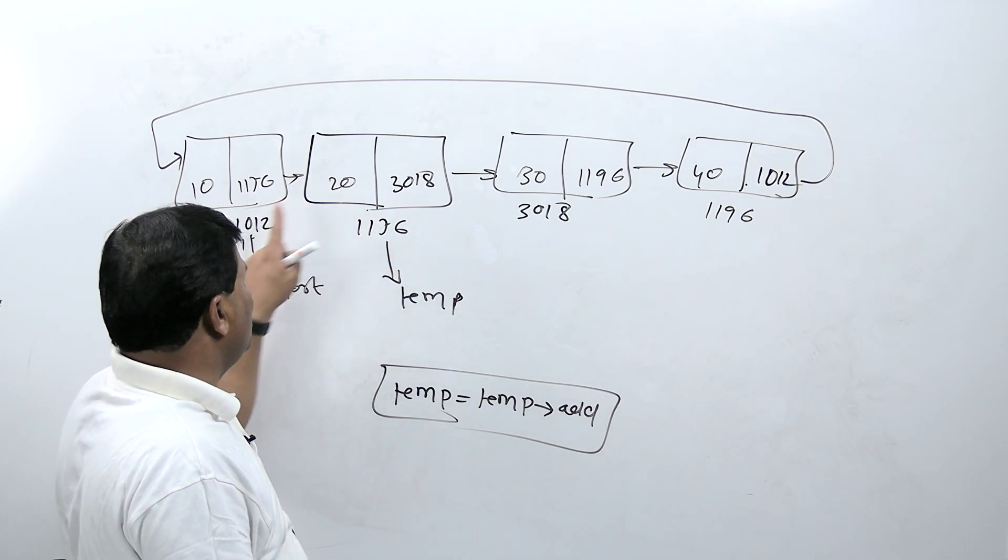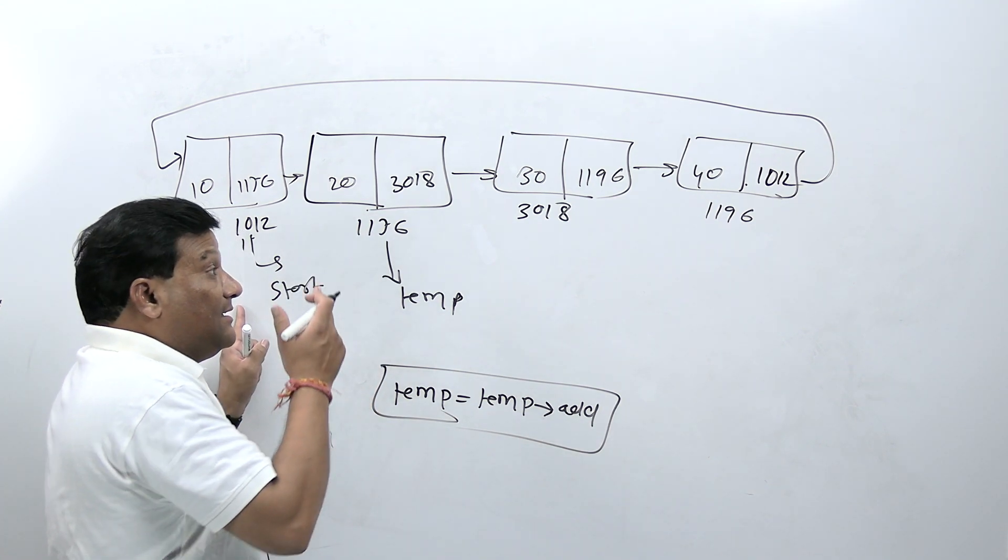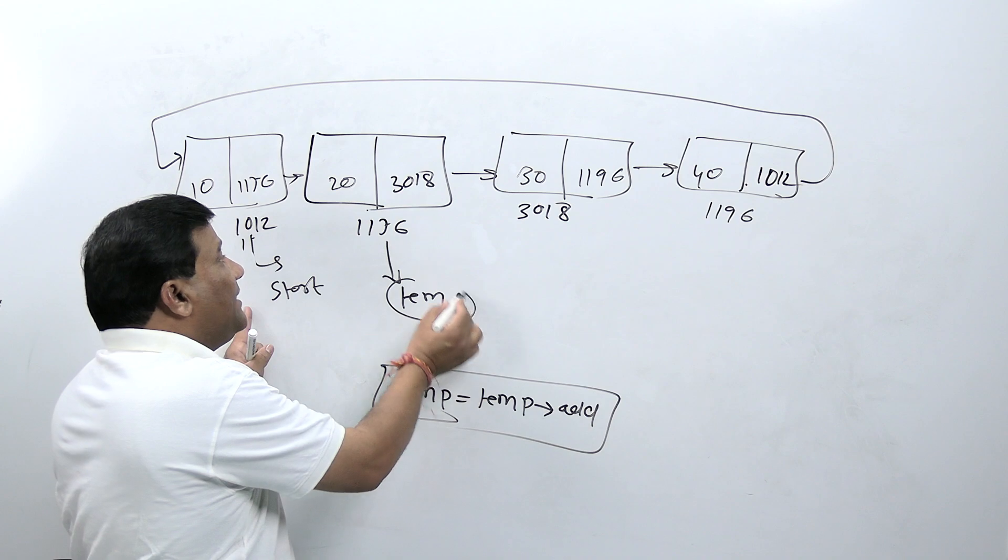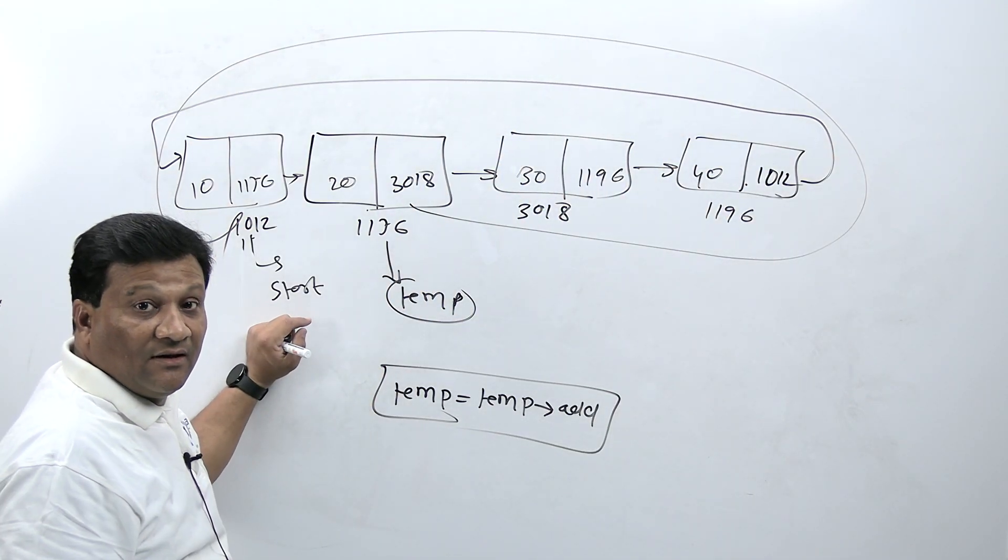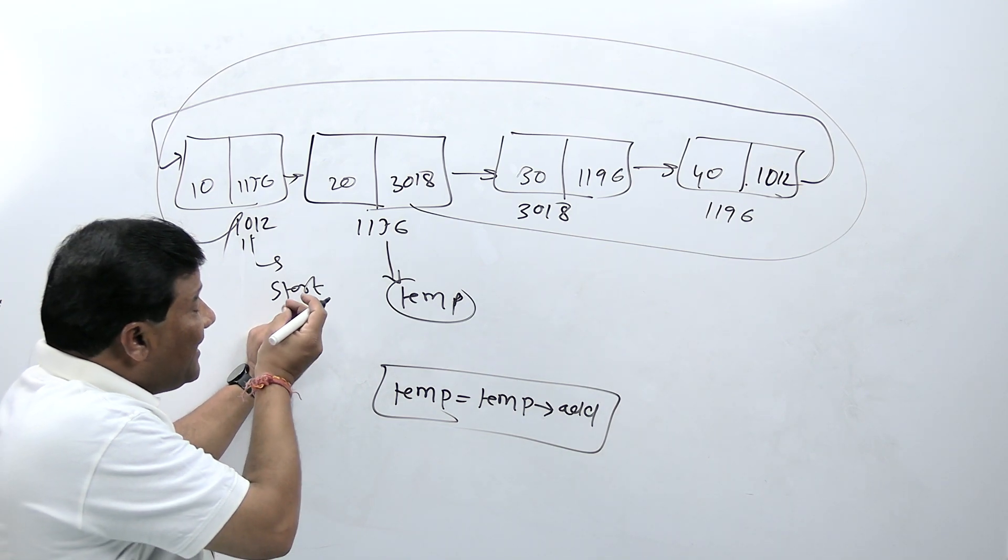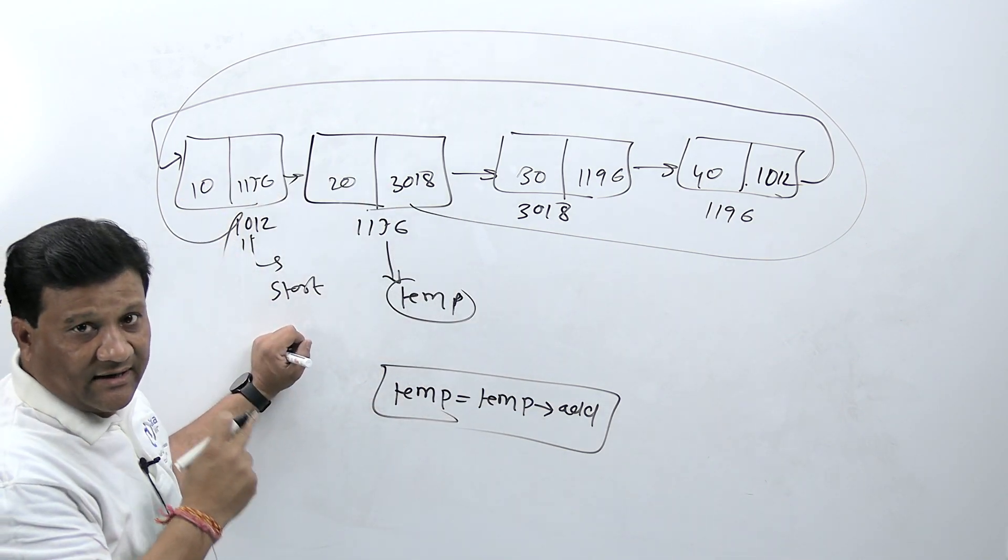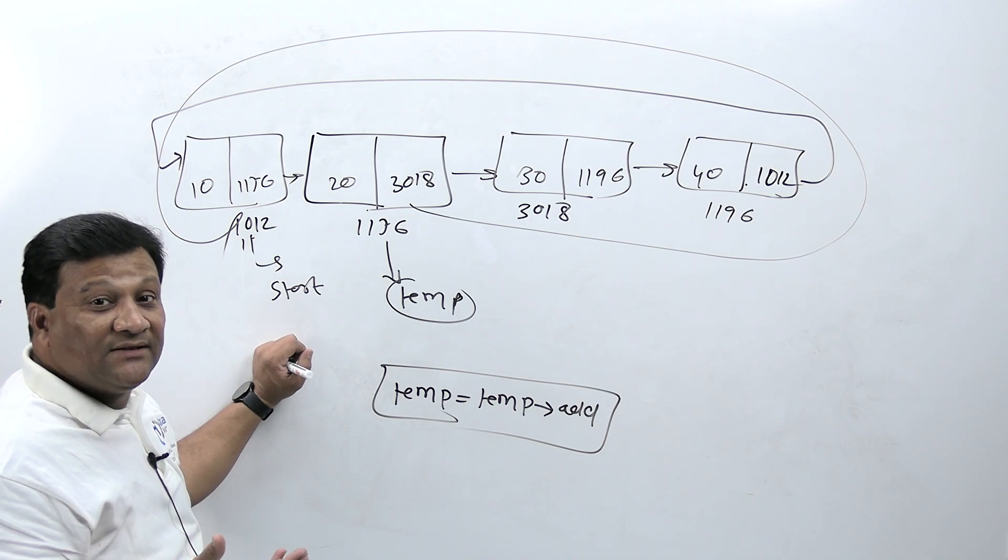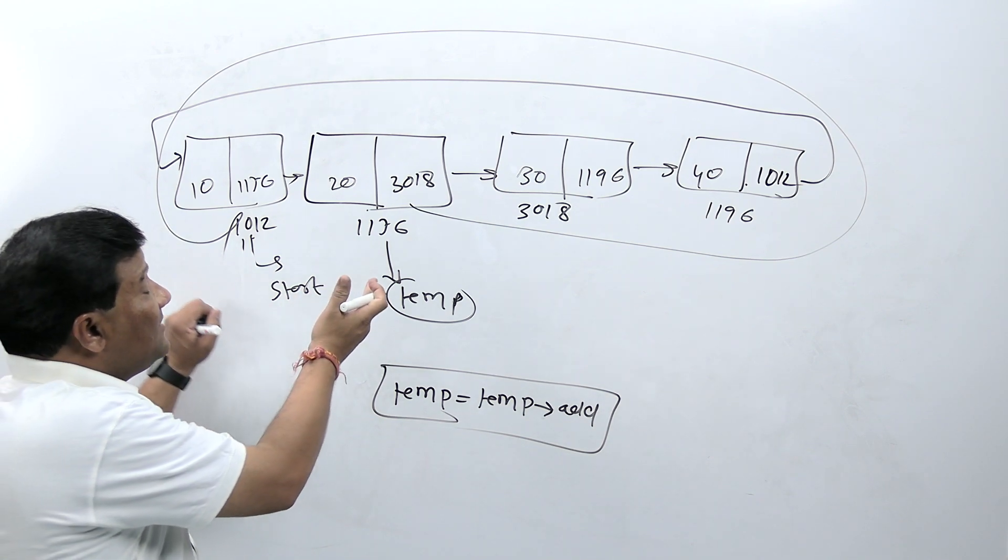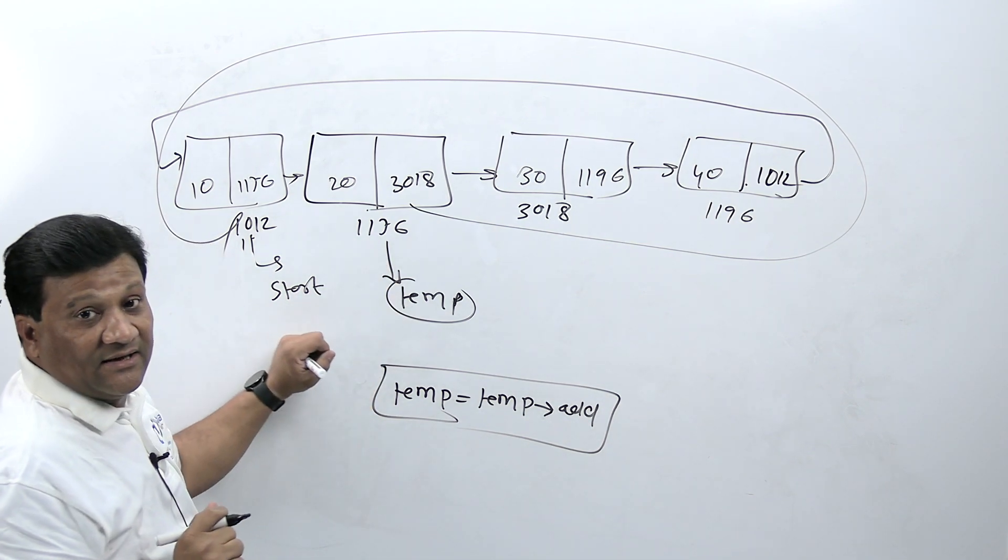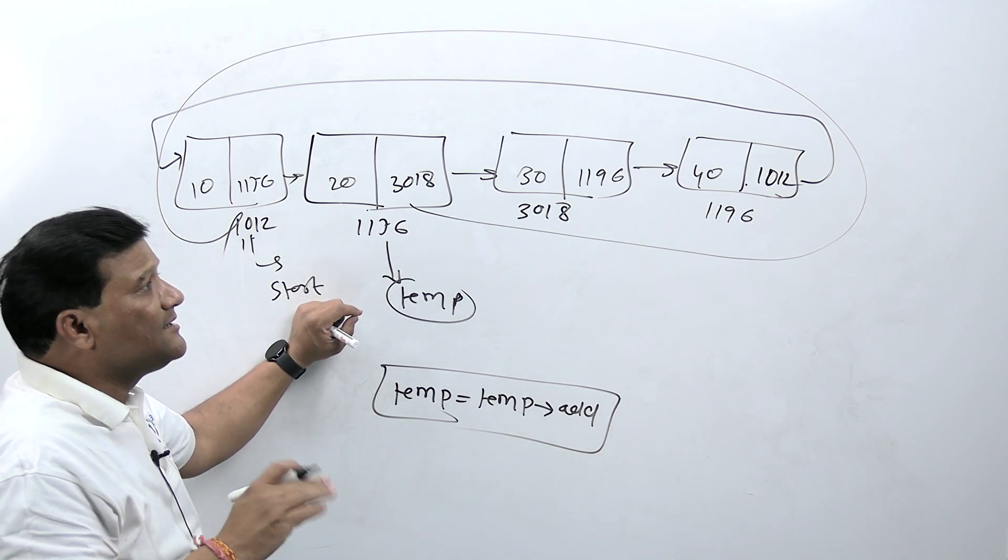Imagine if this list has a thousand nodes and this temporary pointer needs to move just one node back. In single linked list it's not possible. In circular linked list it's possible but the pointer has to traverse the entire circle to come back, so time complexity is very high for this operation.